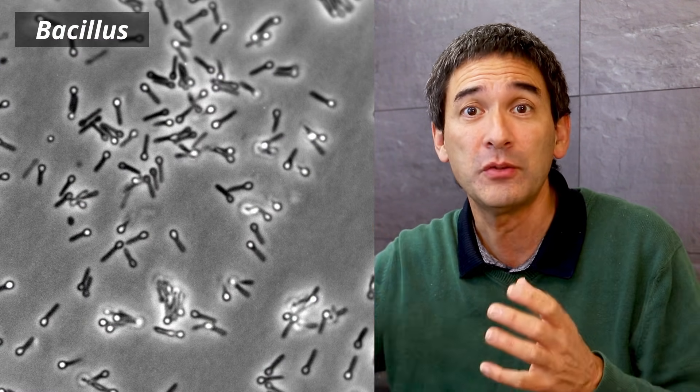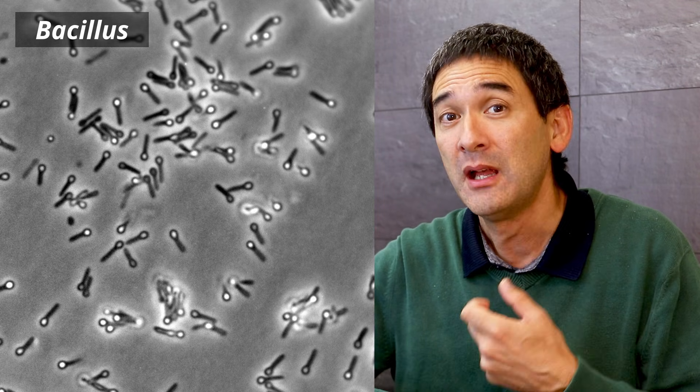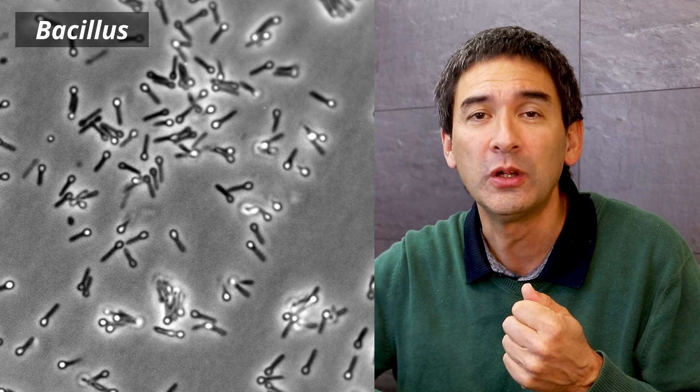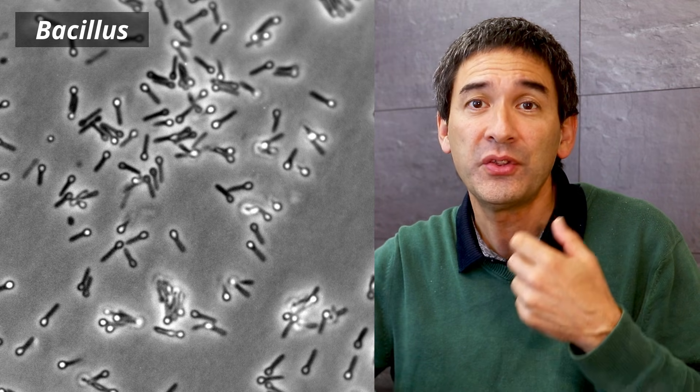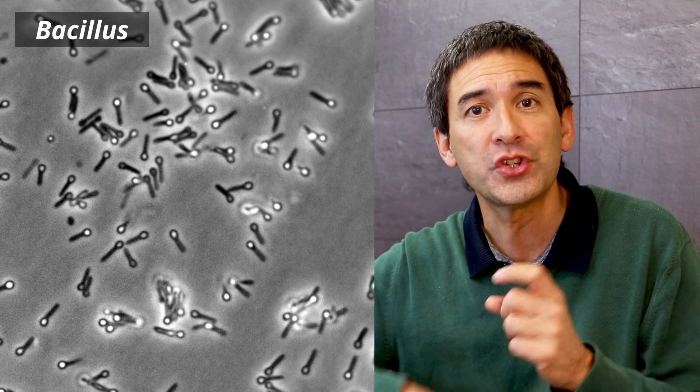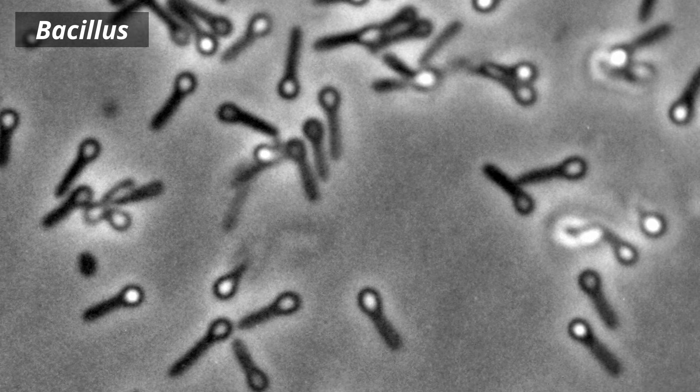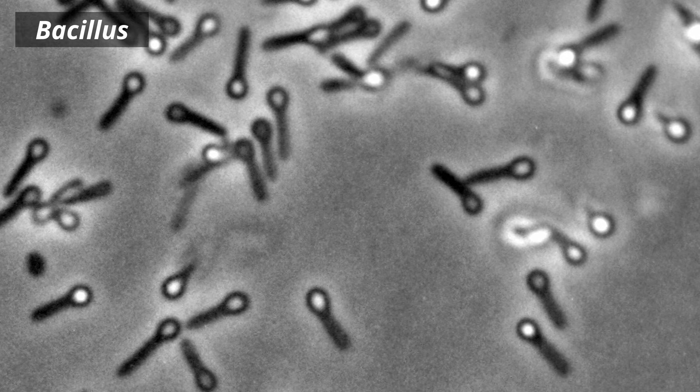So let's begin with the bacterium called Bacillus. Now when the environment turns hostile, the bacterium has a survival strategy because it's able to produce so-called endospores. Now these are dormant structures that contain the bacterium's DNA wrapped up and protected inside multiple layers. And under the microscope, those endospores appear as bright round structures within the bacterial cell.